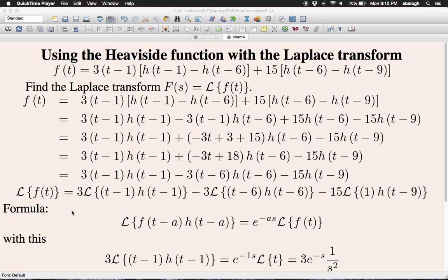The formula that we will use here is this one. If the Heaviside function h of t minus a is multiplied by a function f, where the function is also shifted by a, so the argument is t minus a, then the formula says the way you can calculate it is that you have e to the minus as.